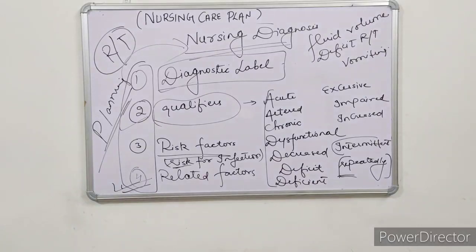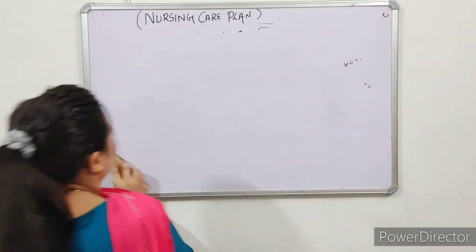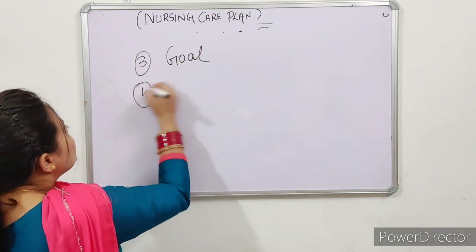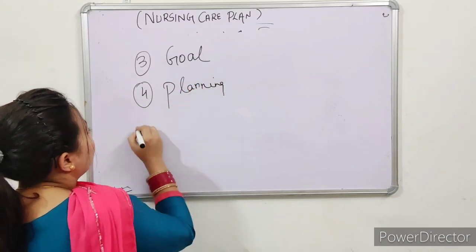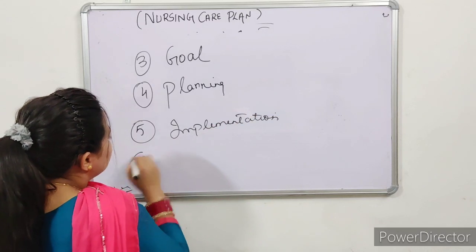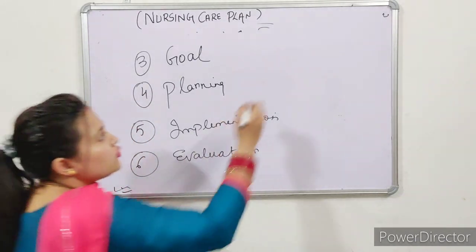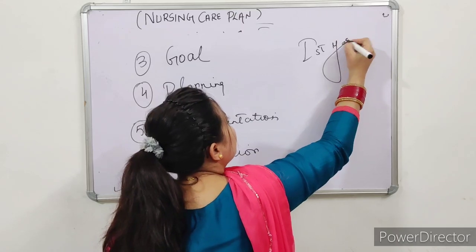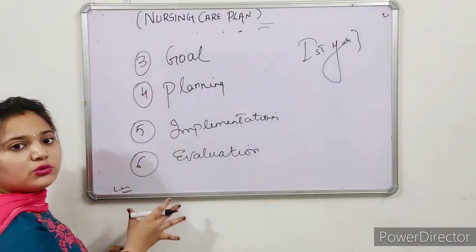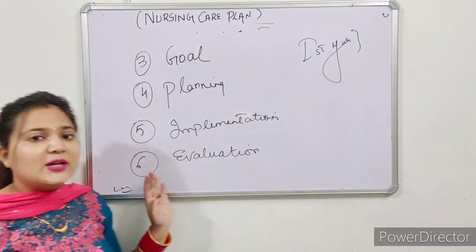The third step is Goal, fourth is Planning, fifth is Implementation, and the last one is Evaluation. This is how nursing care plan is structured. First year students will make it in this way. If you are a second year student, the process is the same but the writing pattern changes slightly for first, second, and third year. So first we are taking the first year approach.